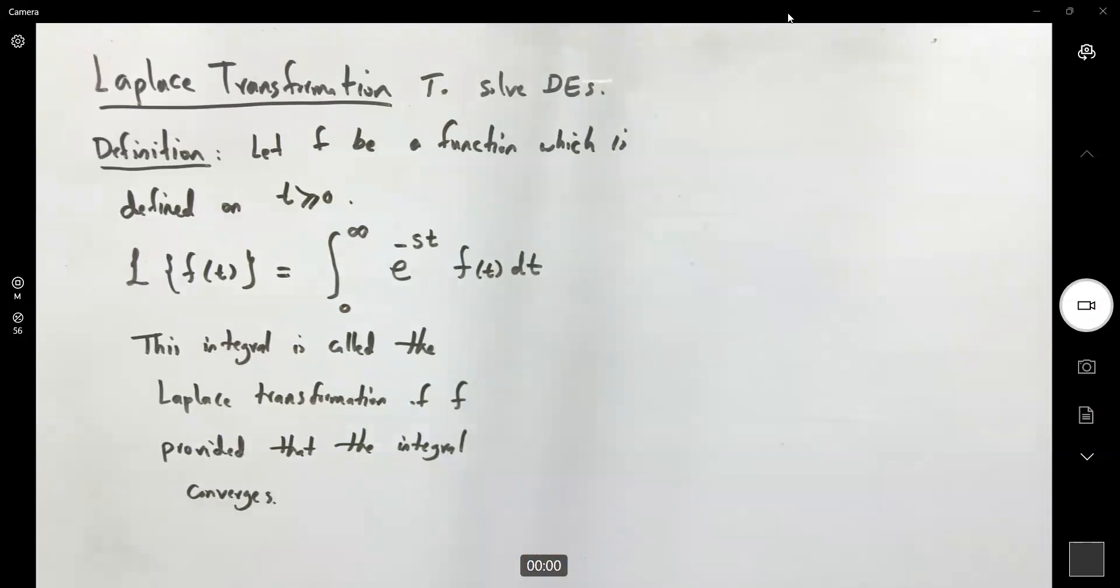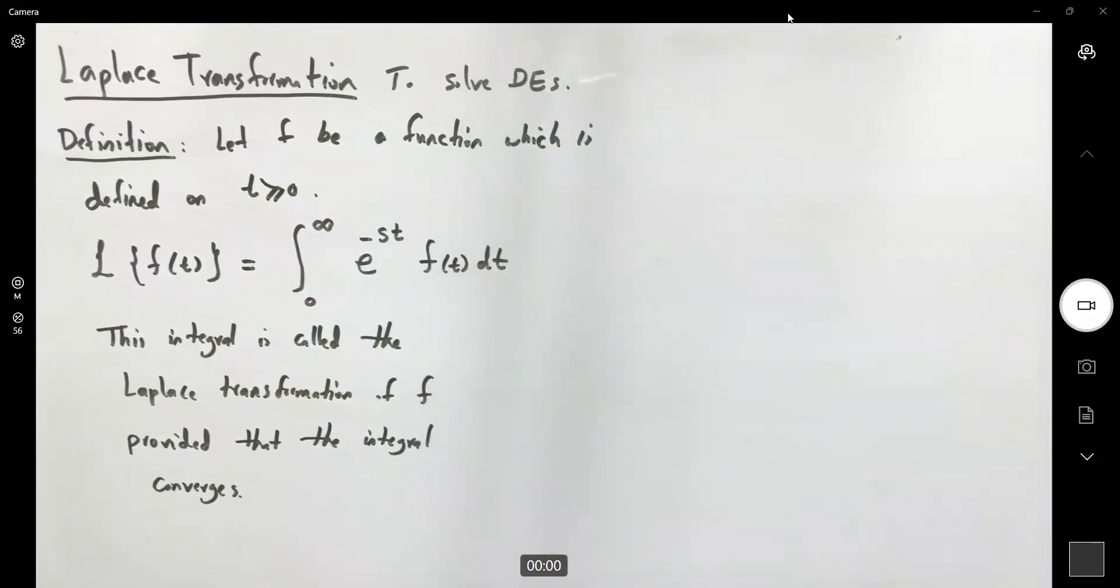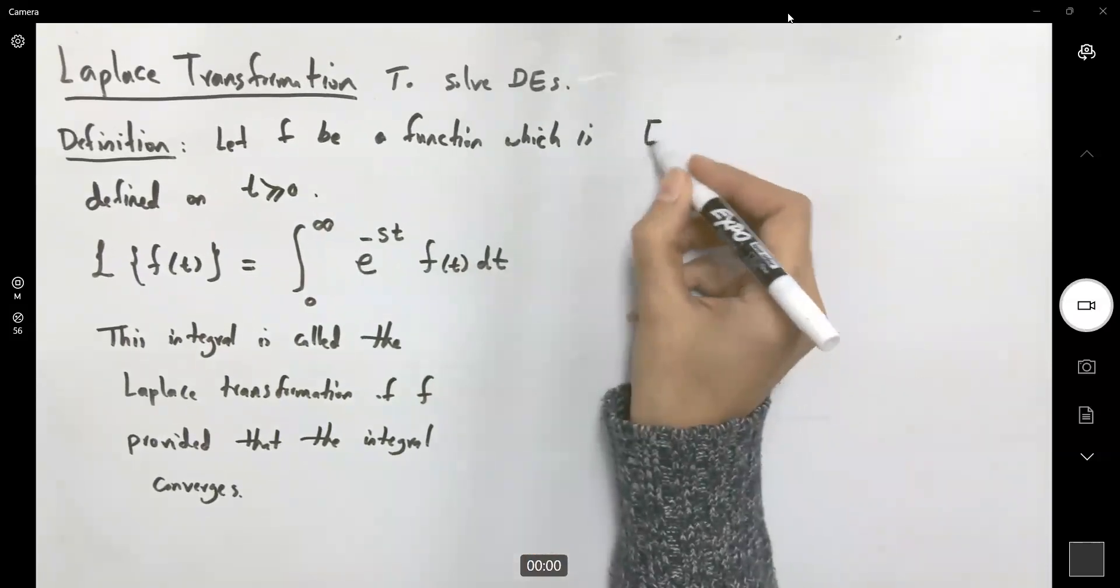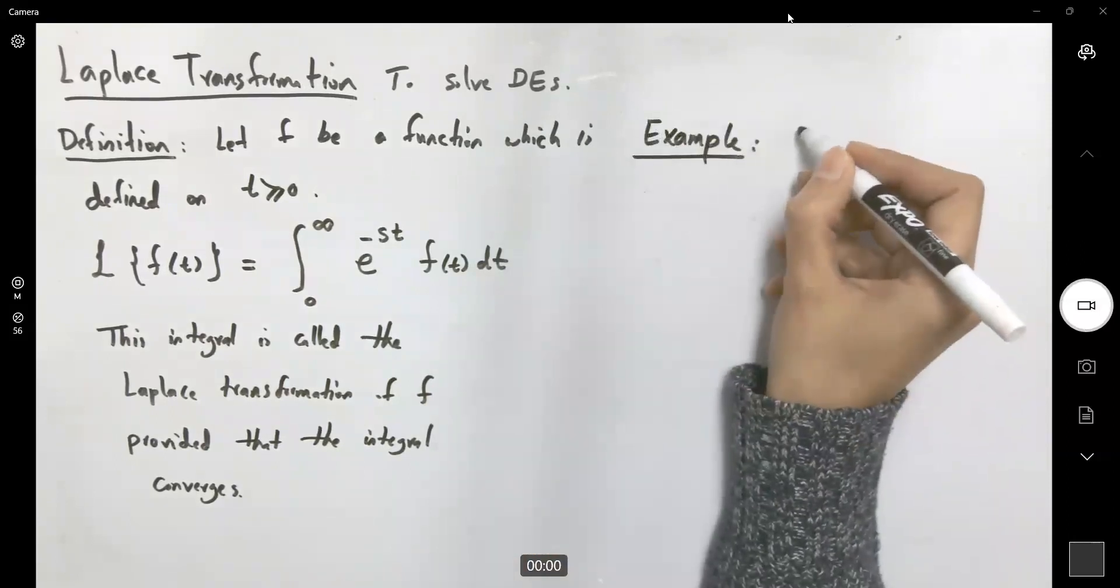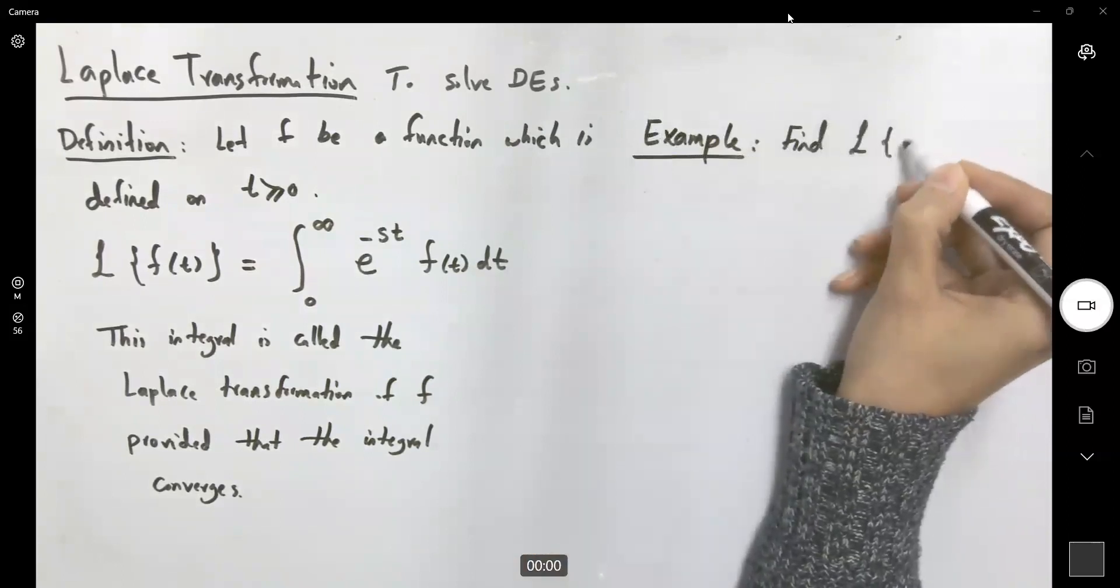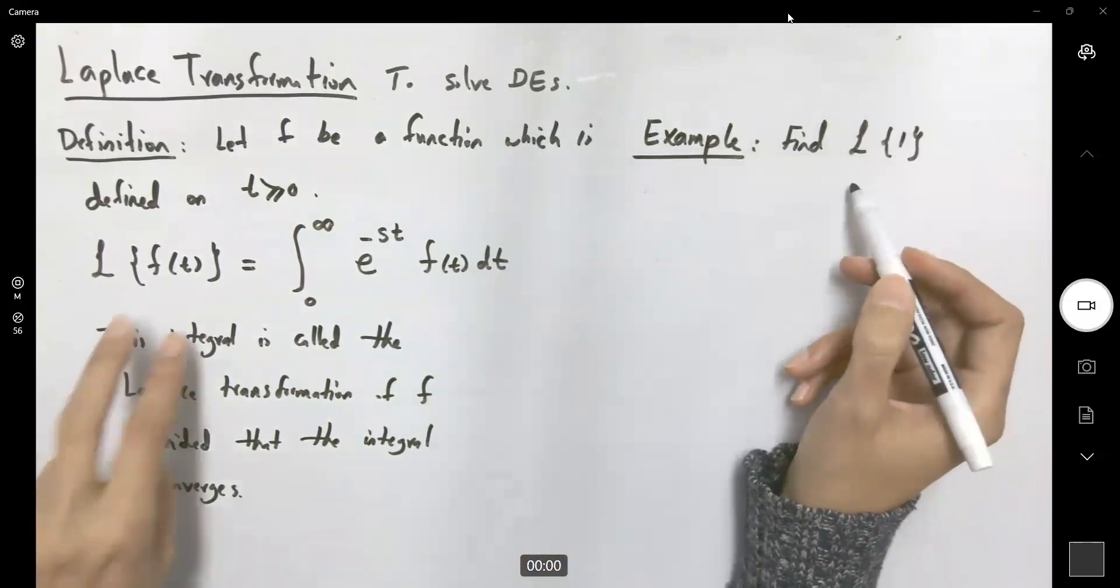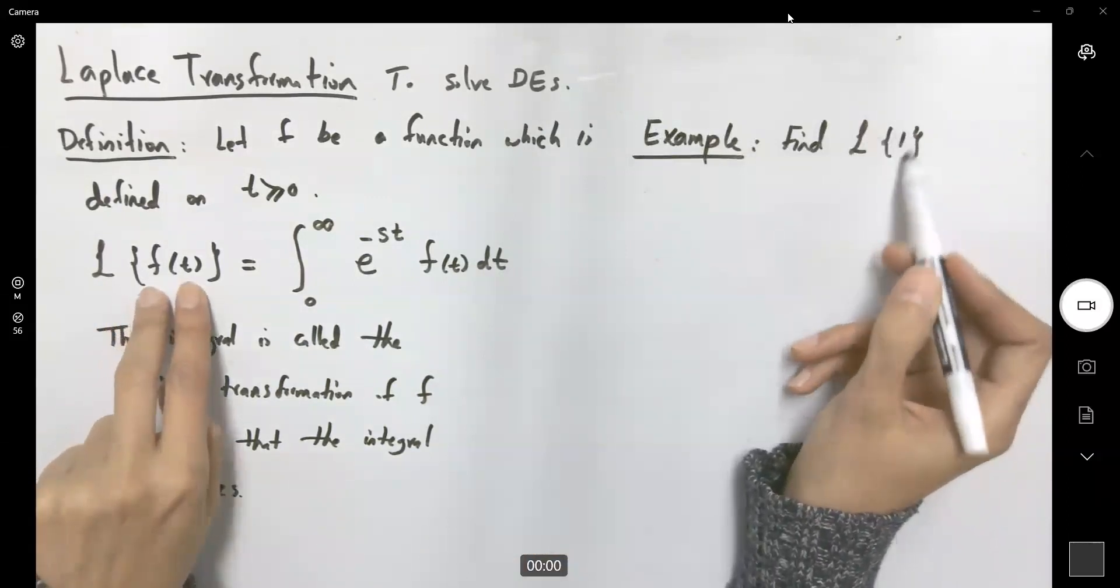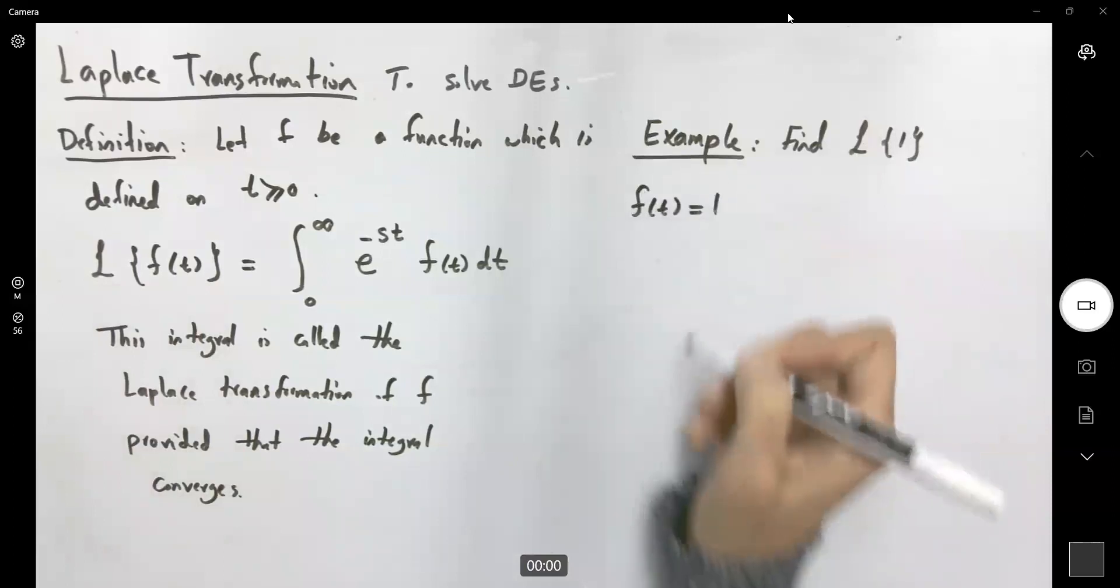Let's go over a couple of examples. Let's start with basic functions like a constant function. Example. Question says, find the Laplace of one. So as you can see, the function that you're dealing with is constant function one. f of t is equal to one.